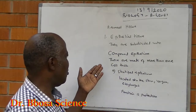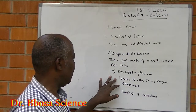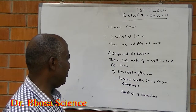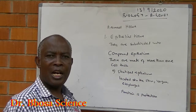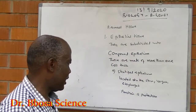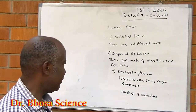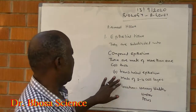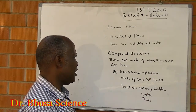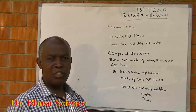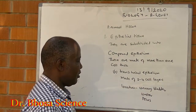We have compound epithelium, which is made of more than one cell thick. A, stratified epithelium — located on the skin, vagina, and esophagus. Its function is to protect, especially against friction. B, we have transitional epithelium. It is made up of several cell layers. It is located in the urinary bladder, ureter, and renal pelvis.